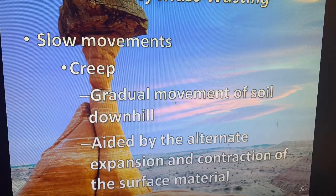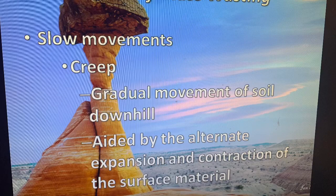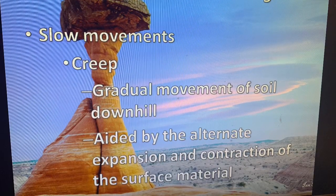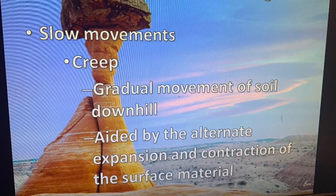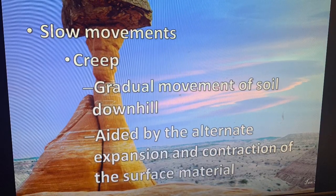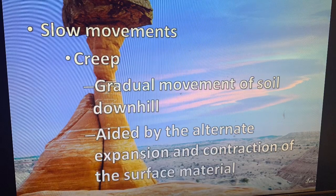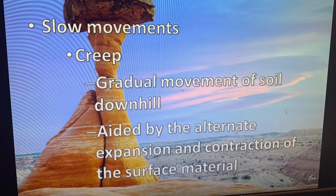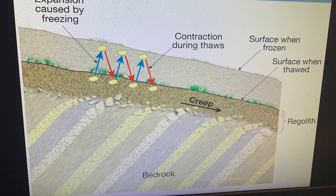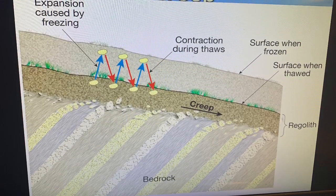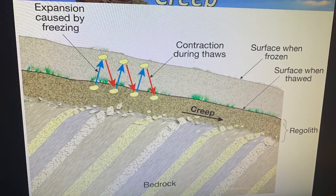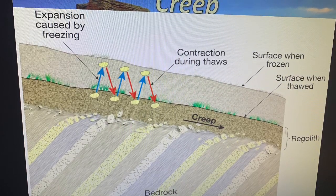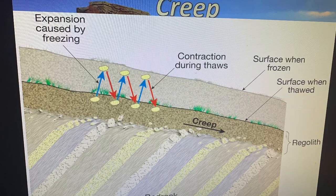The first type of mass wasting is the slow movement known as creep — a gradual movement of soil downhill. Over a long period of time, soil slowly works its way downward in elevation and piles up at lower elevations. This is aided by the soil expanding and contracting as temperatures raise and fall during the year, even between daytime and nighttime. Hot things expand and cold things contract, and this leads to bits of soil slowly working their way down.